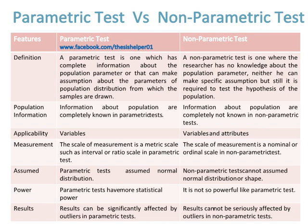Parametric tests assume normal distribution, while non-parametric tests cannot assume normal distribution or a specific shape. Parametric tests have more statistical power, while non-parametric tests are not as powerful as parametric tests. Results can be significantly affected by outliers in parametric tests, while results cannot be seriously affected by outliers in non-parametric tests.